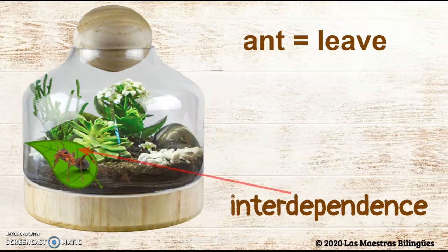The ant and the leaves are interdependence — they help each other. The ant will create fungi from the leaves, and the leaves will decompose to create better dirt for other animals.